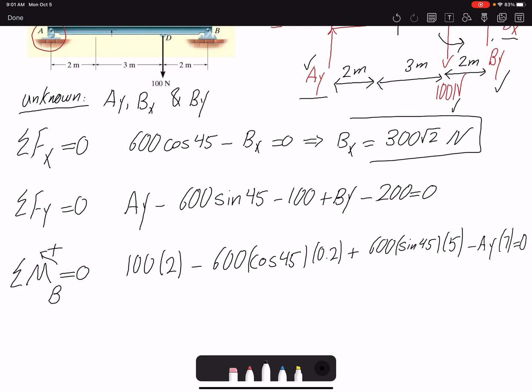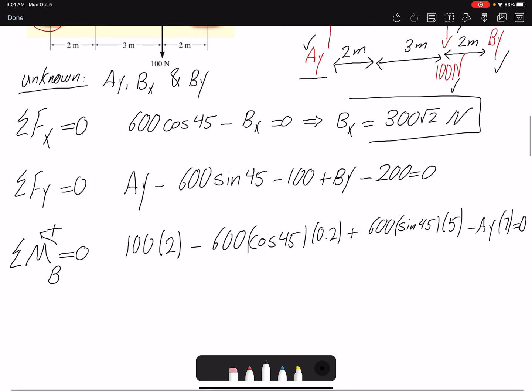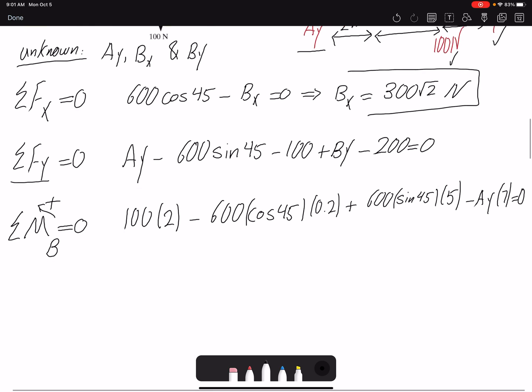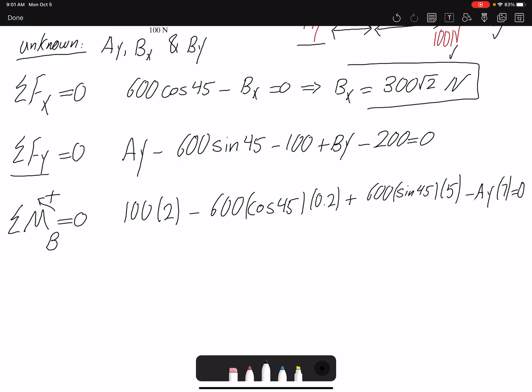Looking at the equation for summation of forces in y, I had two unknowns, that's why I left it as is. But summation of moment about point B, I only have Ay as an unknown, so I can find Ay. Ay would be 319.49 newtons.